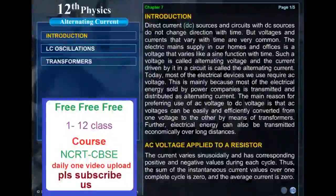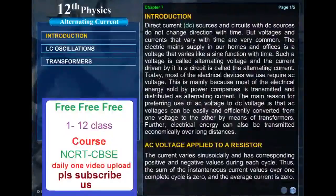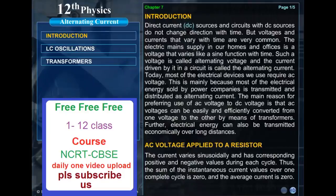Direct current DC sources and circuits with DC sources do not change direction with time. But voltages and currents that vary with time are very common. The electric mains supply in our homes and offices is a voltage that varies like a sine function with time. Such a voltage is called alternating voltage and the current driven by it in a circuit is called the alternating current.